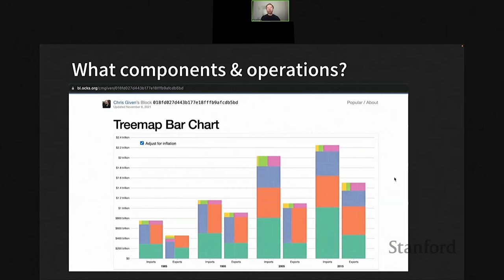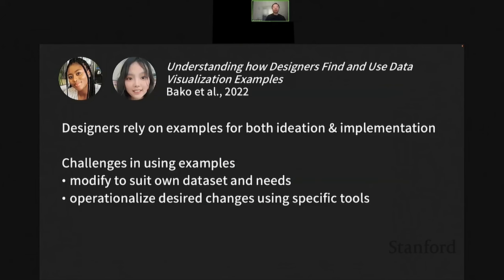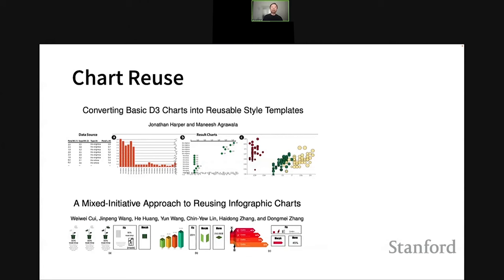When we showed this to potential users of Data Illustrator, they had no idea which components or operations to use to create something like this. This problem is not unique to Data Illustrator — for any visualization library or tool, it's very hard to translate a desired design into the operations or primitives afforded by that tool. Based on our interview study with visualization designers, we found they rely extensively on examples for both design ideation and implementation, but face challenges in using examples — they don't know how to modify the example to suit their own dataset and needs, or how to operationalize the desired changes using specific tools.